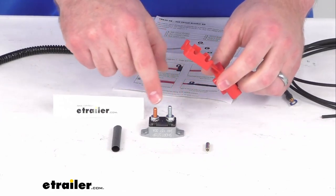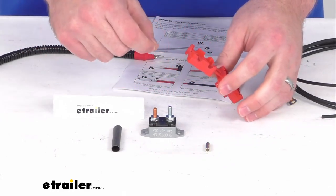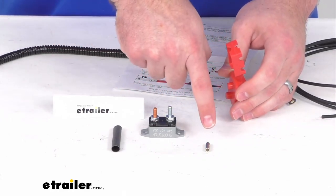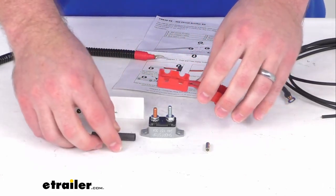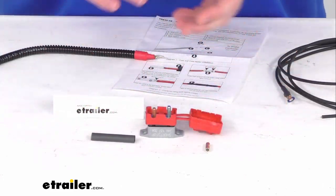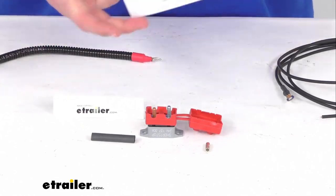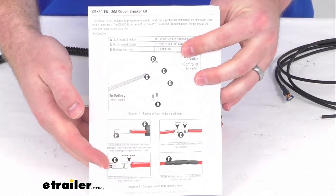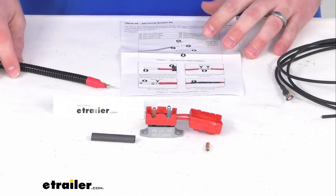You're going to get the two nuts for attaching the cables to the circuit breaker, a butt connector, and one heat shrink for covering that to make sure you have a nice solid connection, as well as the instruction sheet to walk you through how to get everything assembled.